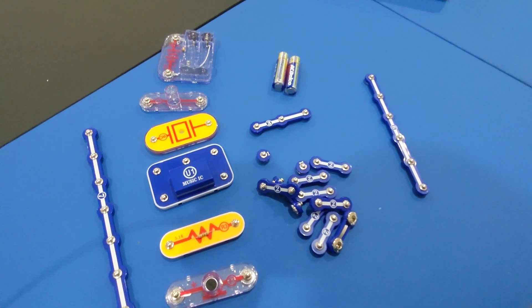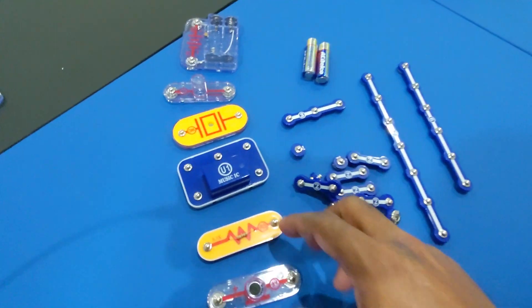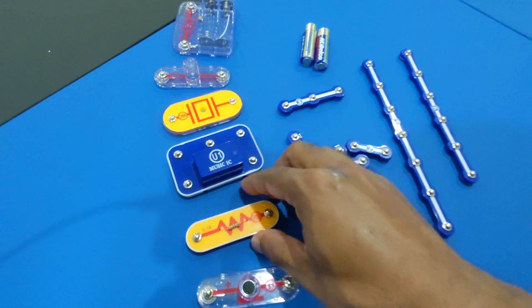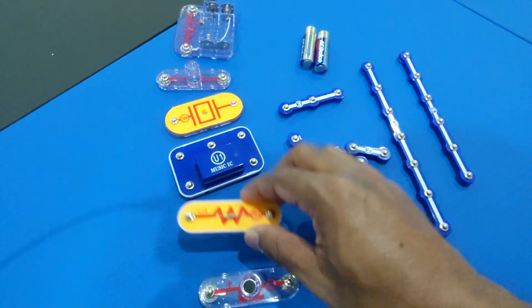So let's just go through the parts real quick. We've got our usual rails, microphone that's going to detect the clapping or the sound, resistor that limits current.